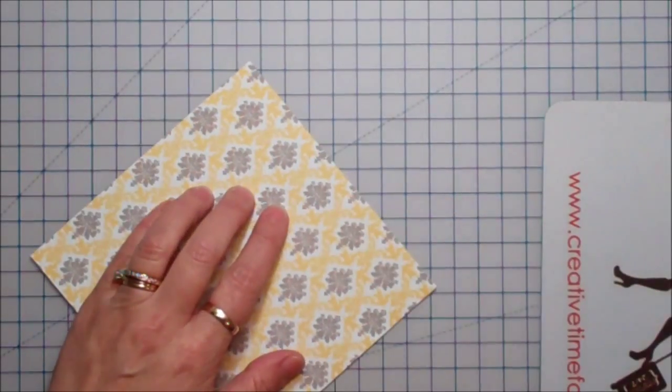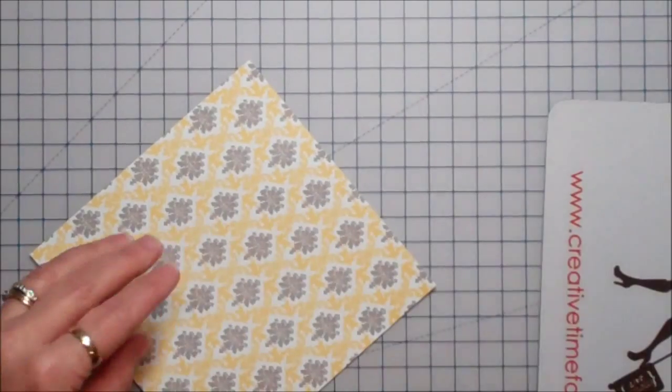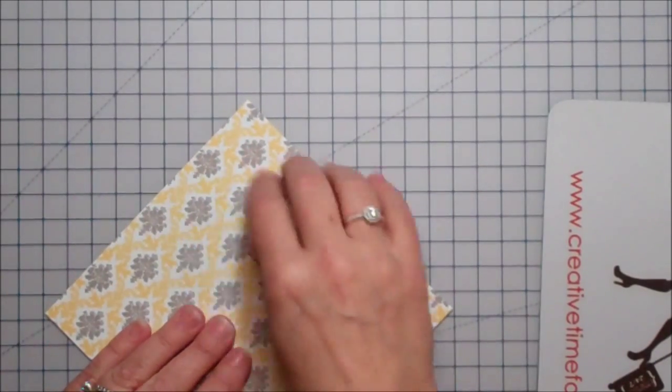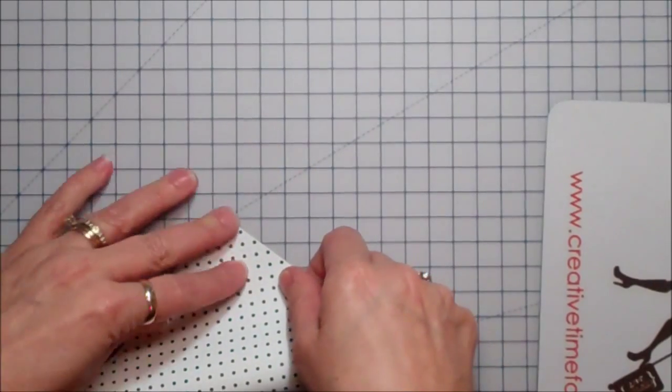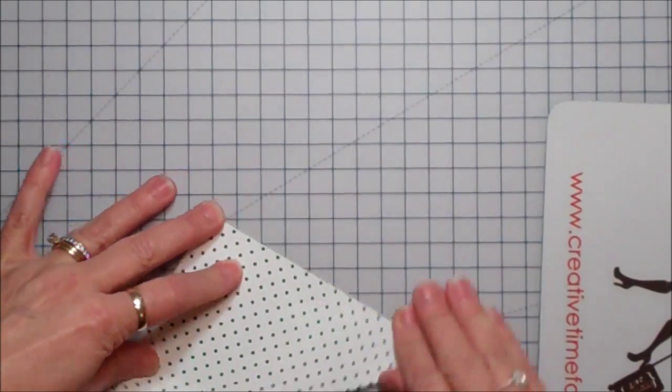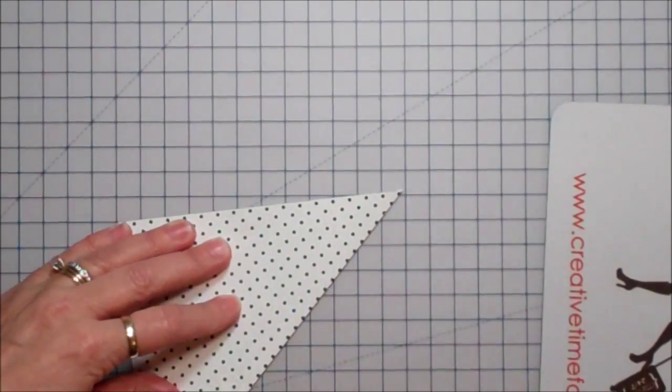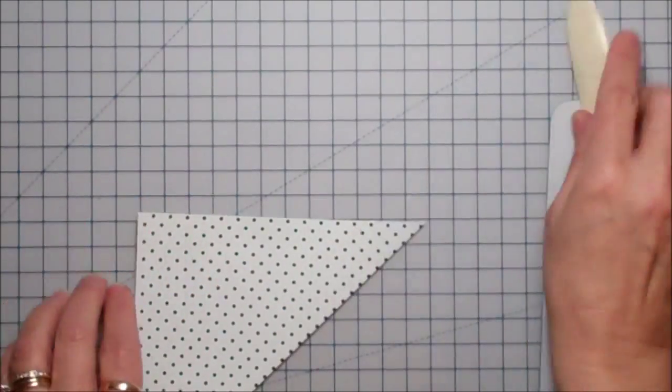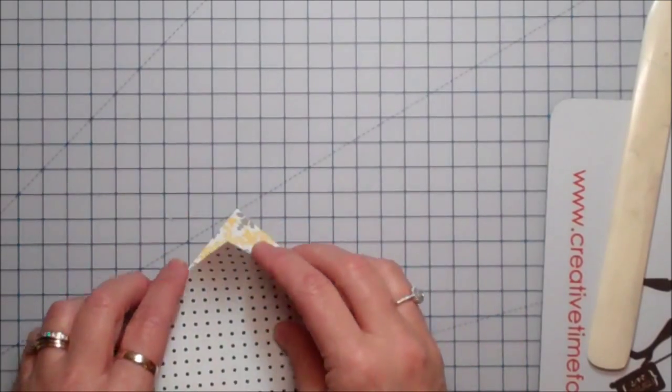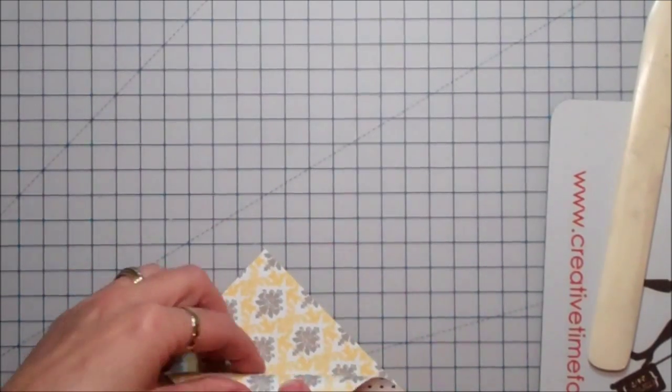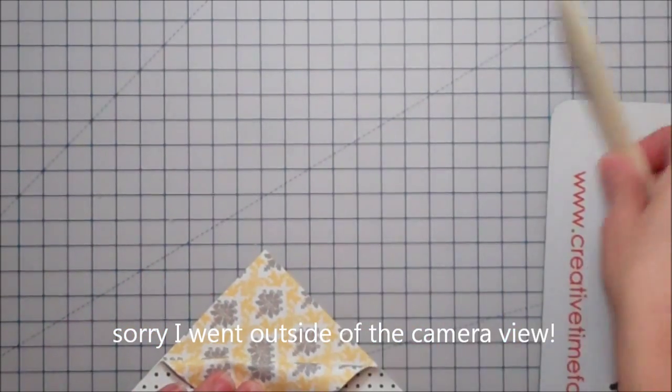I want my yellow to be the top and the part that folds over. Whatever you want to show the most, you're going to fold this down. You could score it if you want, but you really don't need to. Just use your bone folder. Then you fold one side down straight, making sure it's even with the other side.